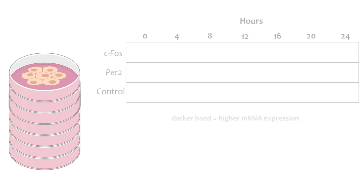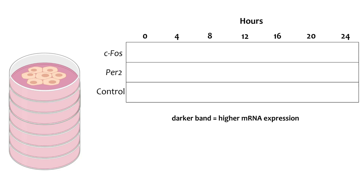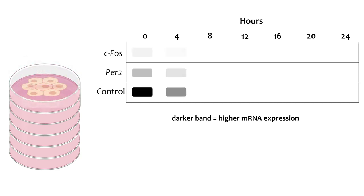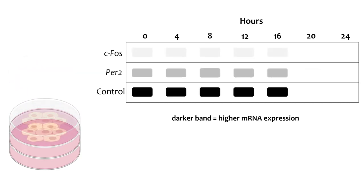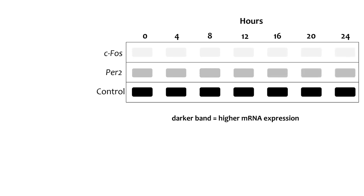For the experiments we will review, the investigators created an RNA blot to measure specific mRNAs in their sample at each time point. The more mRNA, the darker the band. In this example, investigators cultured fibroblasts from rat skin cells and collected samples every four hours. They measured mRNA for the clock gene PER2 and for CFOS, a gene that reflects cellular activation. They also measured a control gene to make sure they are measuring from the same amount of sample at each time point.